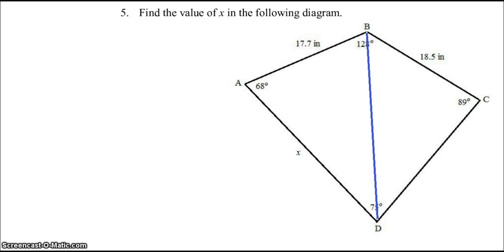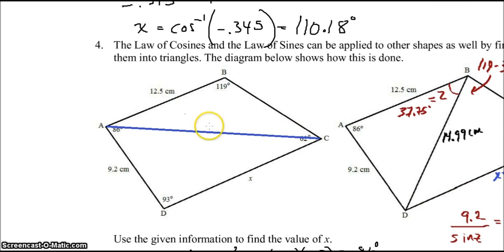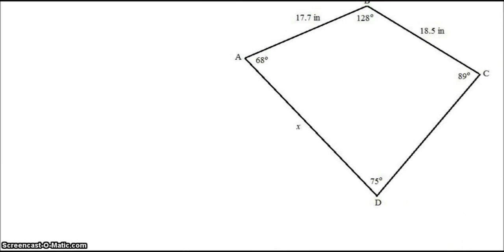So we need to find X. Let's see, I wonder if finding this length here will help us. I'm not sure, but let's just do it. Let's call this one Y. Let's see. I think we're stuck. Nothing works here. You could try the law of sines or cosines, but it doesn't work. Actually, putting the line right here doesn't do us very much good. We need this line so that we have two of the known sides in our triangle. Then we can find our unknown.